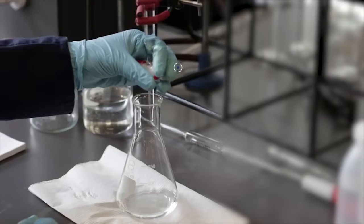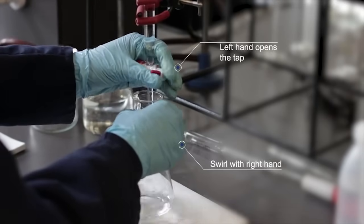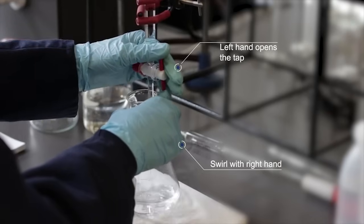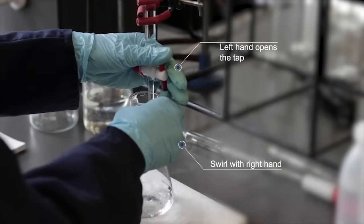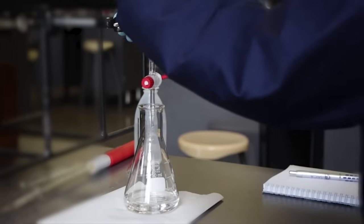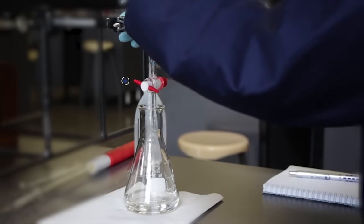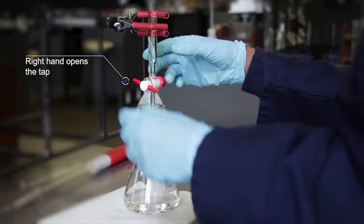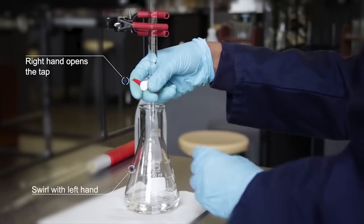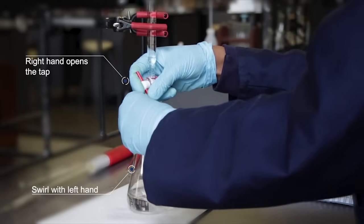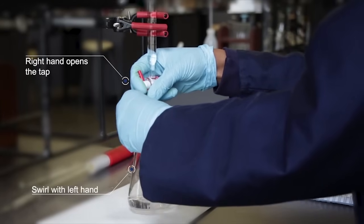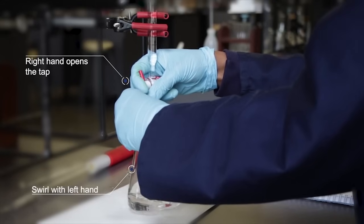For right-handed individuals, the burette tap will be handled using your left hand while the flask is swirled with the right hand. However, for left-handed individuals, the burette tap is handled with the right hand and the flask swirled using the left hand. In this case, the left-handed individuals will have to reverse the burette to accommodate their titrations.